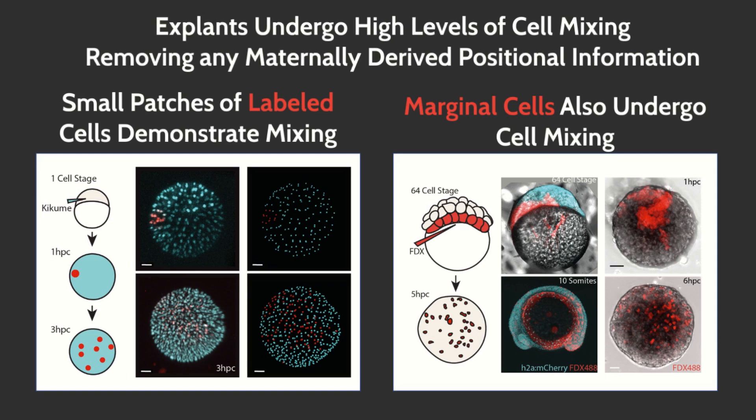We therefore conclude the initial pre-pattern established by early developmental signals can be removed, and yet the explant can continue to pattern the primary germ layers, even in the context of extensive cell rearrangement.